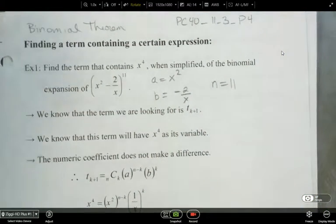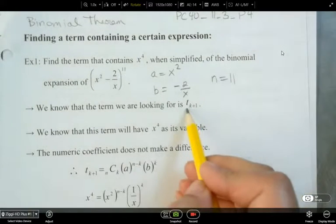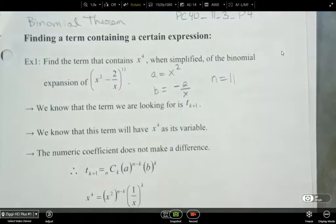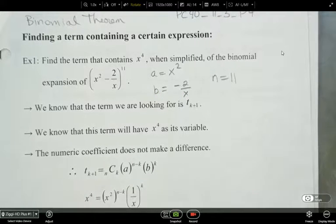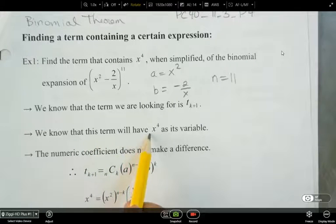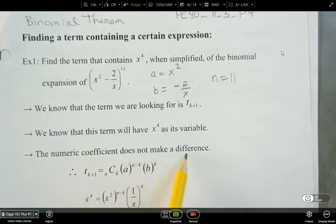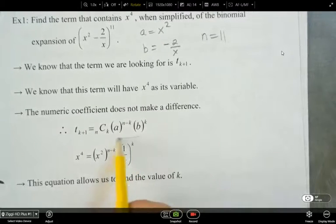So we know that the term that we are looking for is t sub k plus 1. I'm just going to make this a little clearer if possible. And then we also know that this term is going to have an x to the power of 4 as its variable. The numeric coefficient does not make a difference.